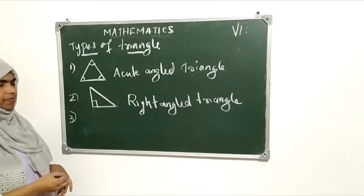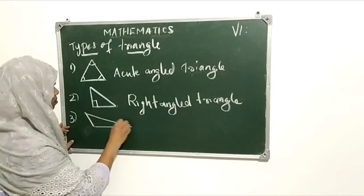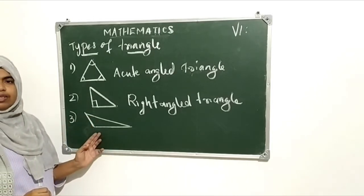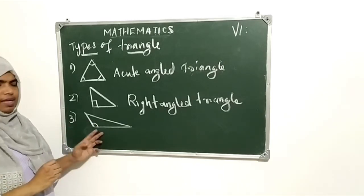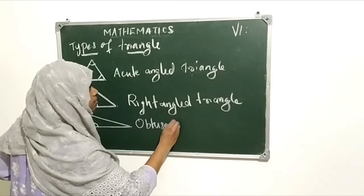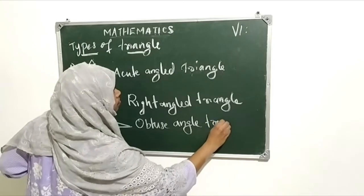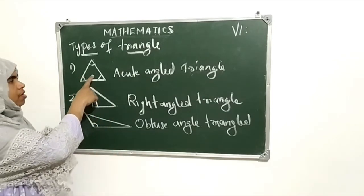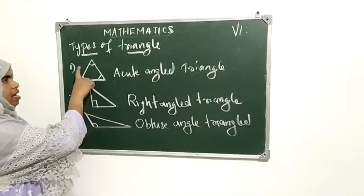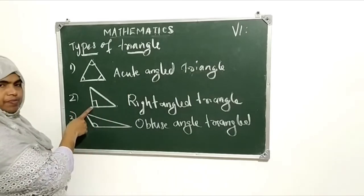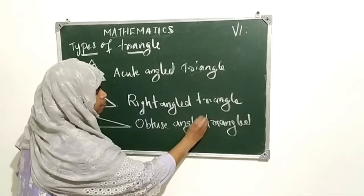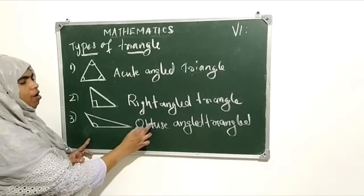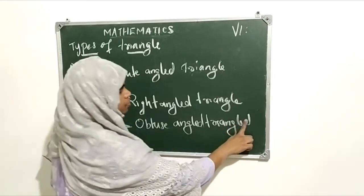Third type: in this triangle, one angle is greater than 90 — that means an obtuse angle. This triangle is called an obtuse angled triangle. So characterizing on the basis of their angles: first is acute angled triangle — all angles are acute. Second is right angled triangle — one angle is 90 degrees. Third is obtuse angled triangle — one angle is greater than 90, or an obtuse angle.